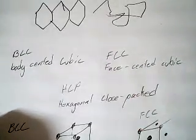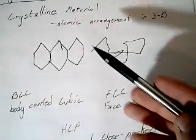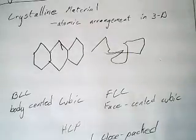Body center cubic, face center cubic, and hexagonal close-packed. They are what composes a crystalline material. They are the repeating patterns that create what is known as a crystalline material.